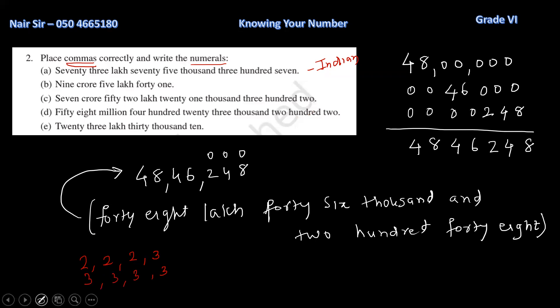Okay? So, now they are saying Indian system. So, Indian system, what will I do? Three. Two. Now, I can read the same number. 48 lakh, 46,000, 248.